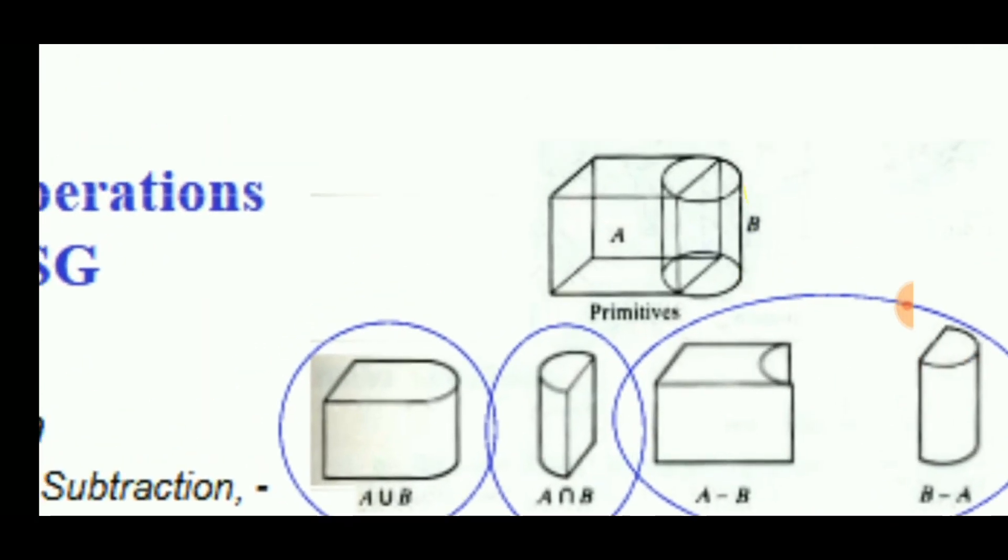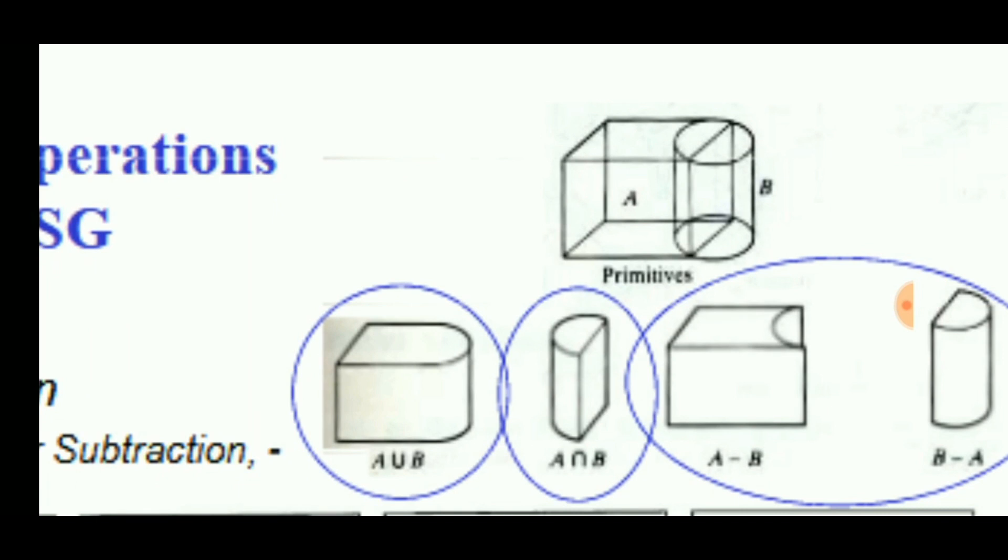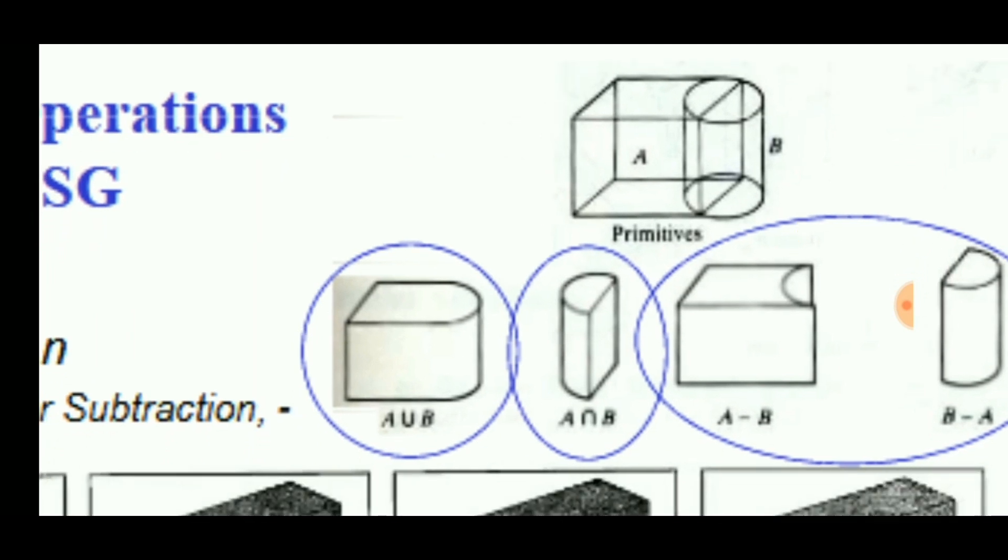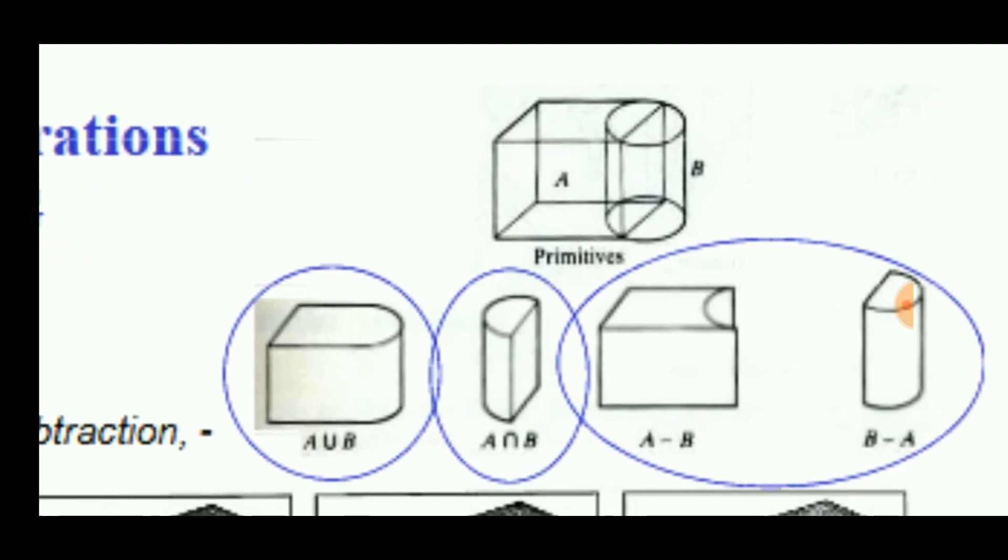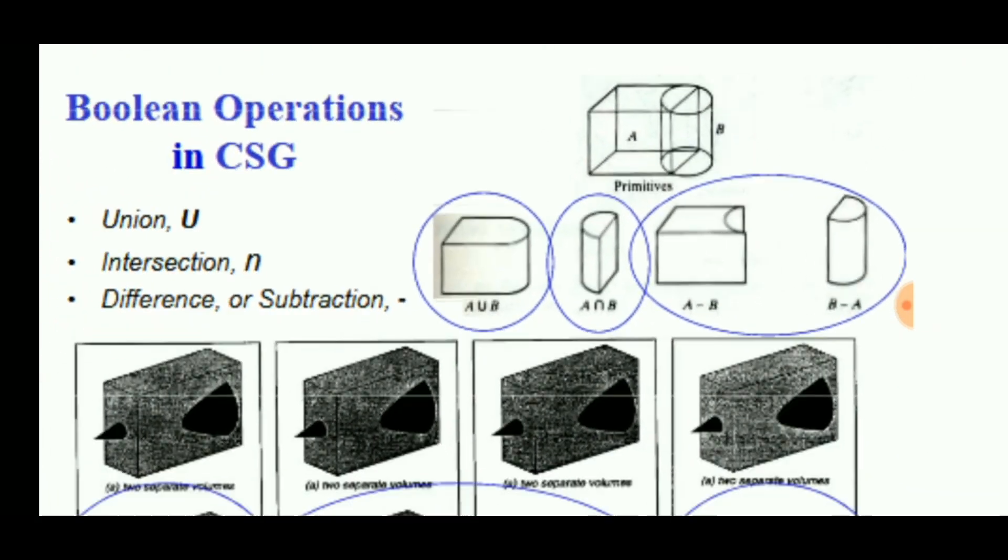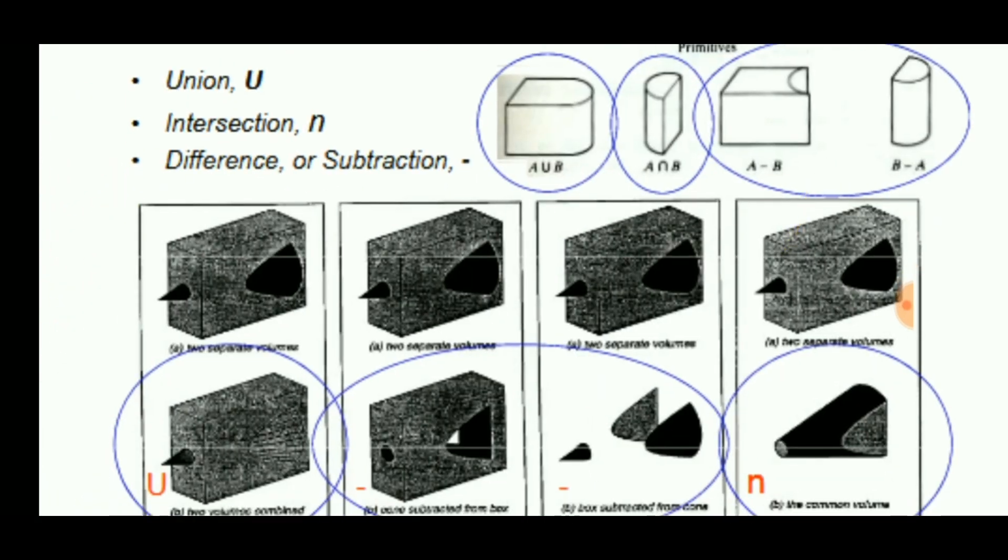When we make intersection, this is the intersection part—the shaded part between A and B. A minus B and B minus A are also similar commands that are produced with a cone and a box.